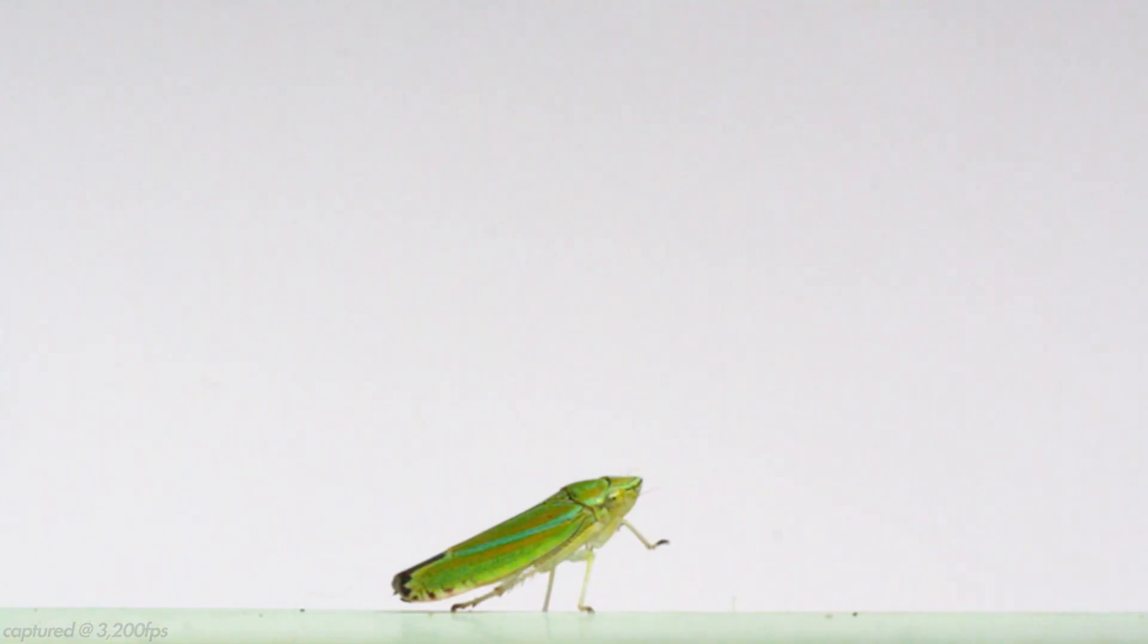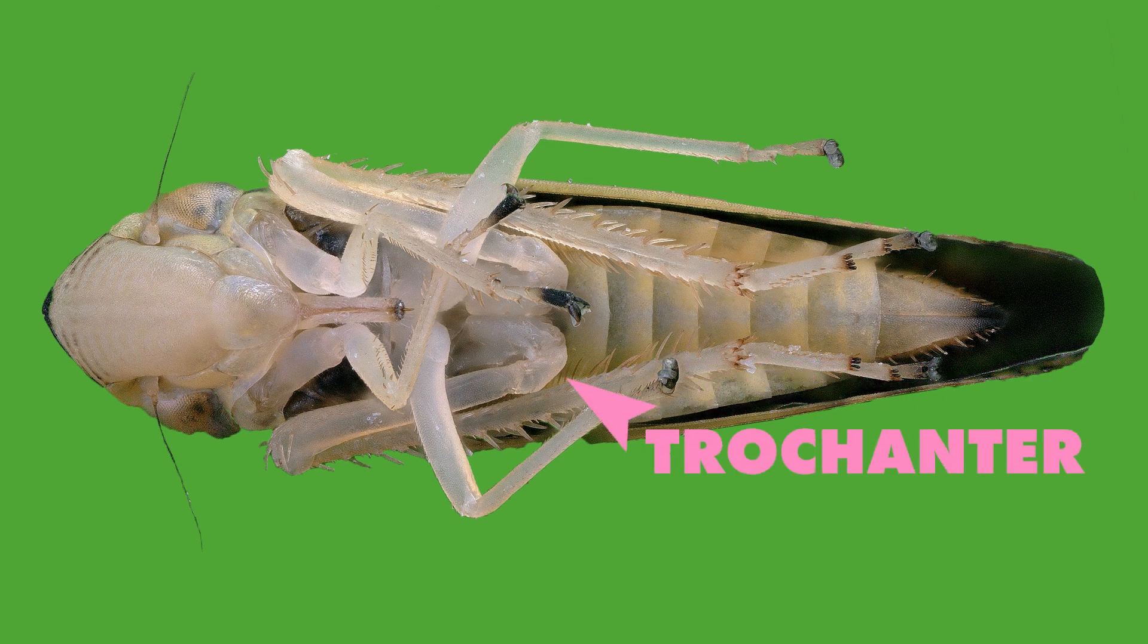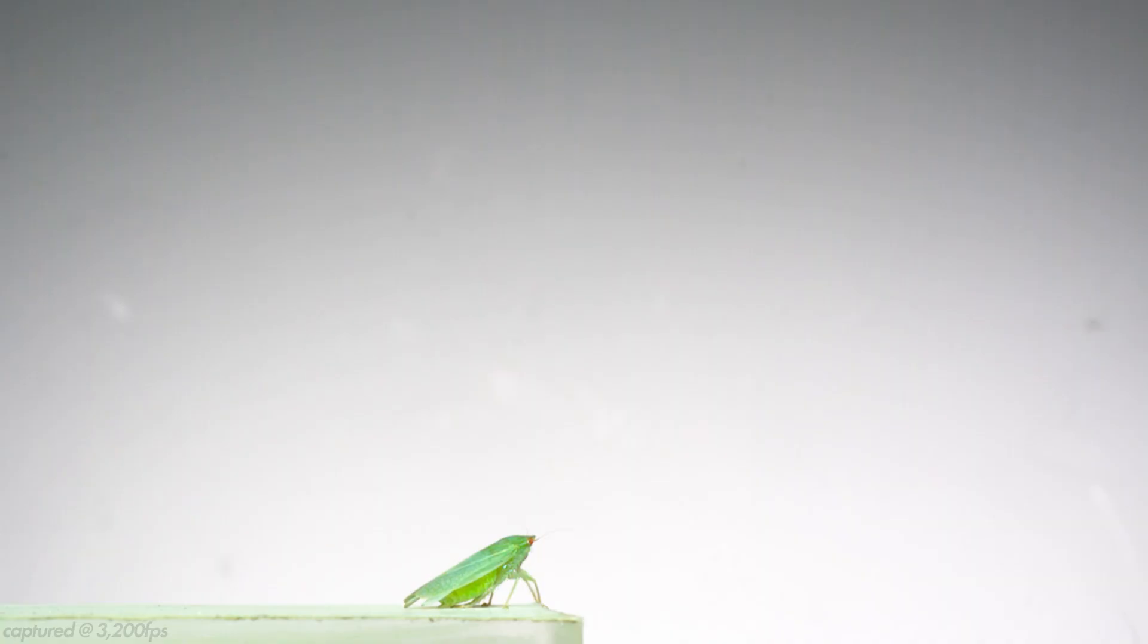Instead, the muscles they use attach to the base of their legs and extend into the thorax. To power the jumps, the muscles contract to briefly store energy, which, when it's released, rotates this segment near the base of their legs called the trochanter. All the hoppers you'll see in this video jump by rapidly rotating that same leg segment.